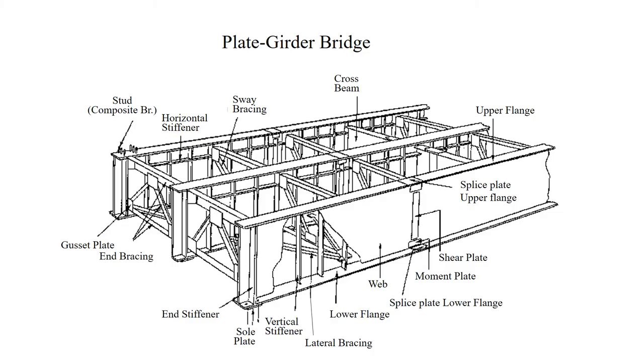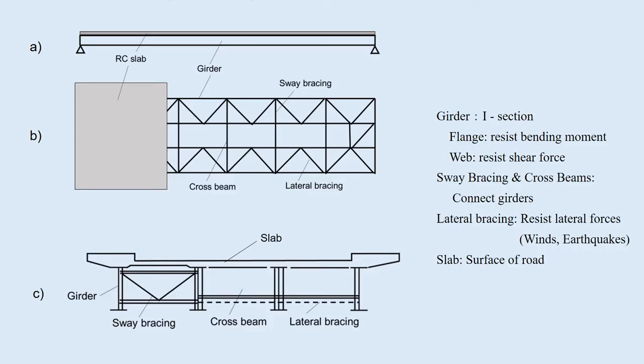This illustrates a typical plate girder bridge. There are three I-girders, which are connected by the sway bracing or the cross beam. The web is stiffened with the vertical and horizontal stiffeners. A is the side view of a typical plate girder bridge, B is the plan view, and C is the cross section. There are four steel I-girders. The flanges resist bending moment and the web resists shear force. The girders are connected by the sway bracing or the cross beam, which distributes the loads among the girders. Lateral forces caused by winds and earthquakes are resisted by the lateral bracing.